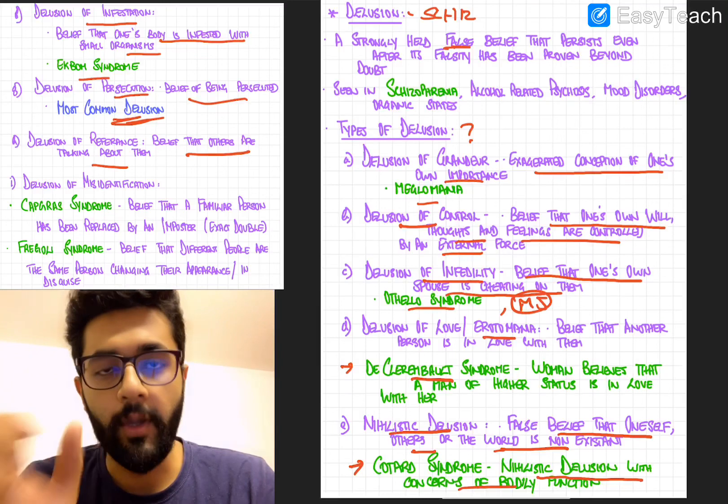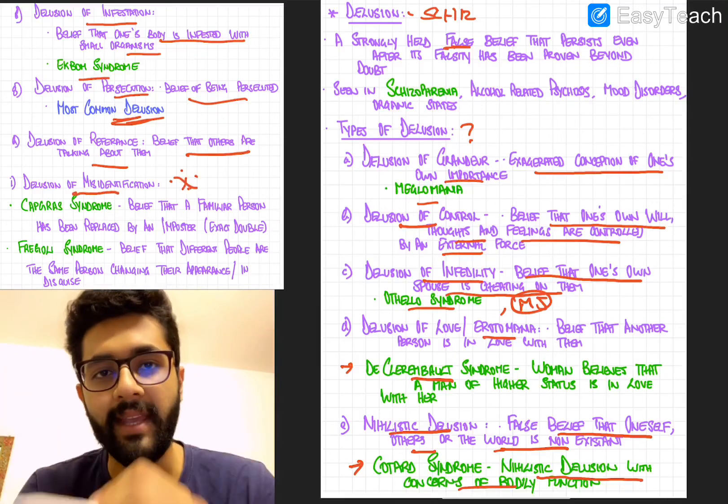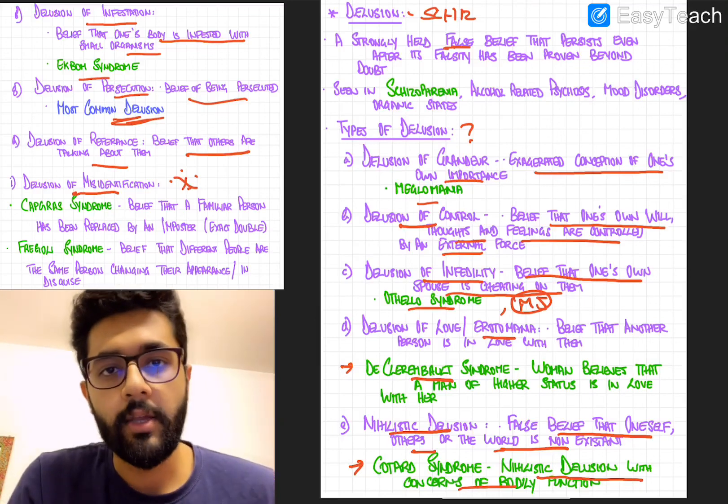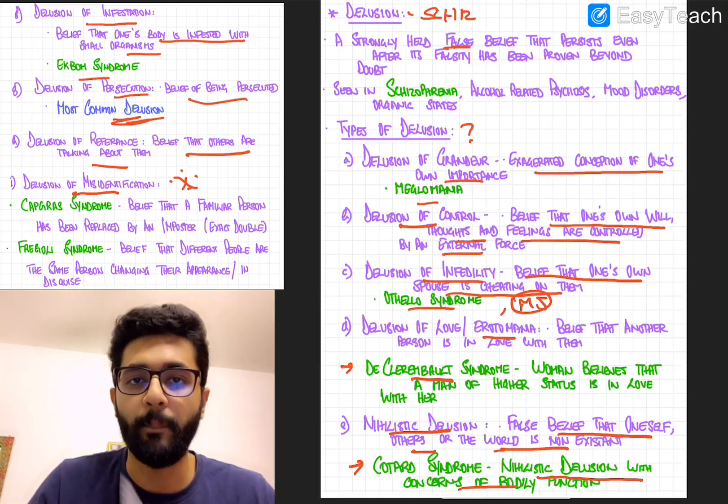Lastly, we'll talk about the delusion of misidentification. This is the most important delusion from the exam point of view. So firstly, you have something called the Capgras syndrome and you have a Fregoli syndrome. Both are delusions of misidentification.